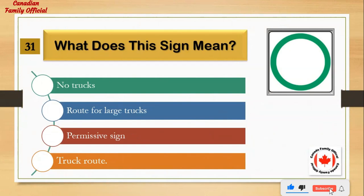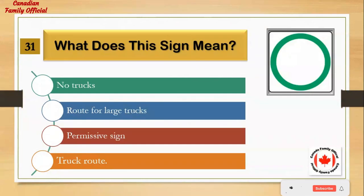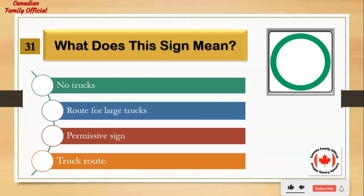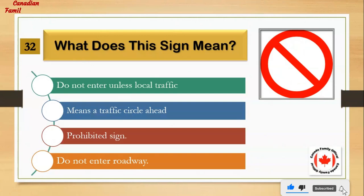What does this sign mean? Number 1: no trucks. Number 2: route for large trucks. Number 3: permissive sign. Number 4: truck route. And the answer is: permissive sign.